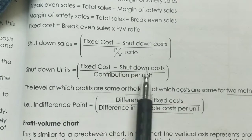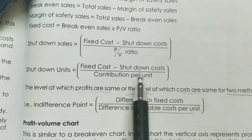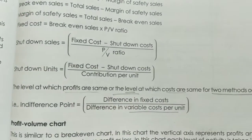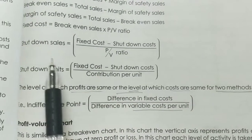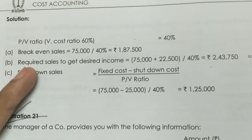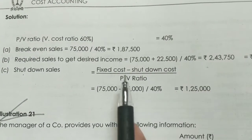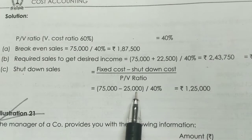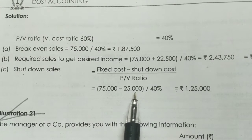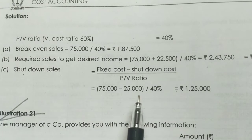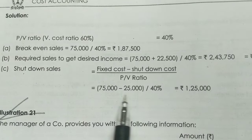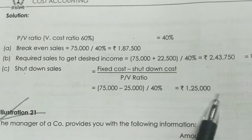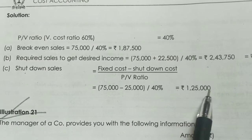During the fixed cost analysis, we apply the shutdown costs as well. We divide accordingly and arrive at the shutdown sales figure. That concludes Illustration 20.